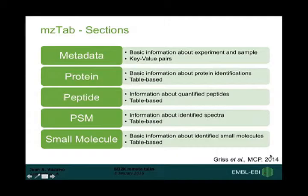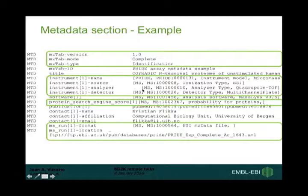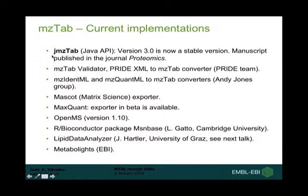mzTab currently has five sections in version 1.0, which is the stable version published a bit more than one year ago in MCP. It has a metadata section based on key-value pairs, and then different tables: one for protein, one for peptide, one for PSM, and one for small molecules — because from the beginning we wanted to consider mass spectrometry metabolomics approaches as well. This is just an example showing the metadata section, which is both computer-readable and human-readable.